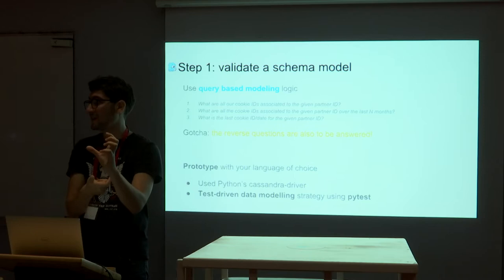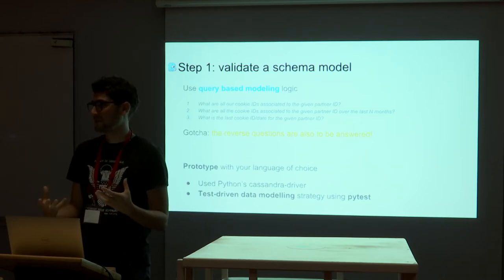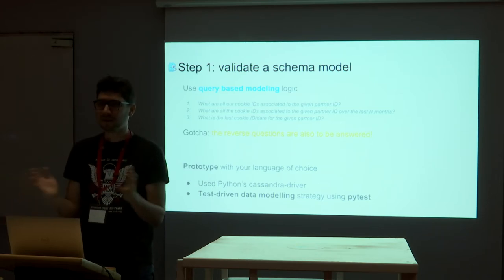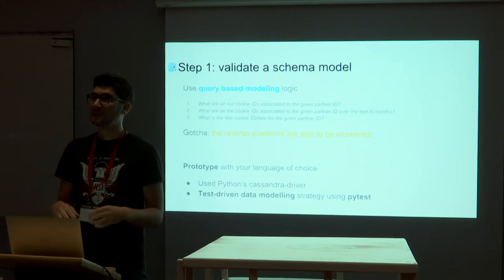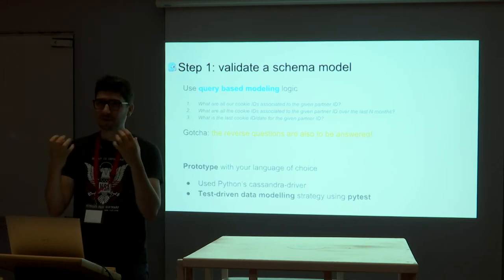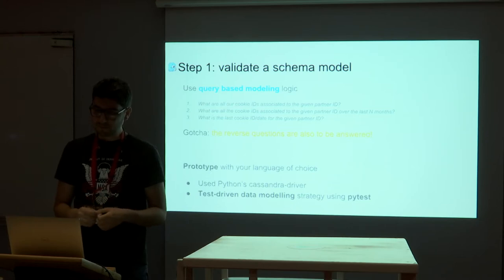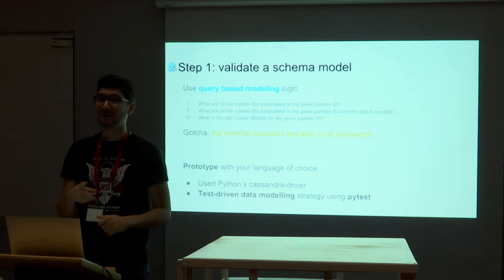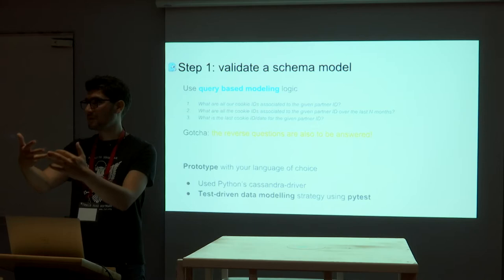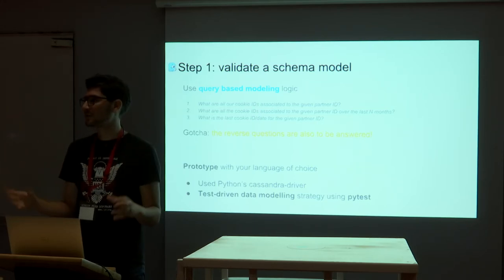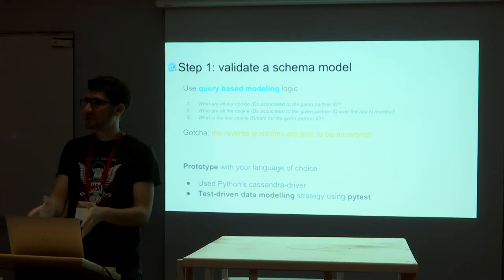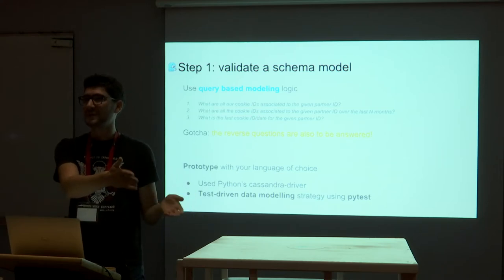Denormalization is almost the norm in distributed databases. It's not natural for us because we're trained to model things relationally at school. But here, denormalization is the approach. In our case, we ended up with three copies of the data to answer all the questions — but it's on the same engine and you have a way to consistently write all of them together using batching, which allows you to have consistent data in all the copies. It's not like having two copies in different engines as before.